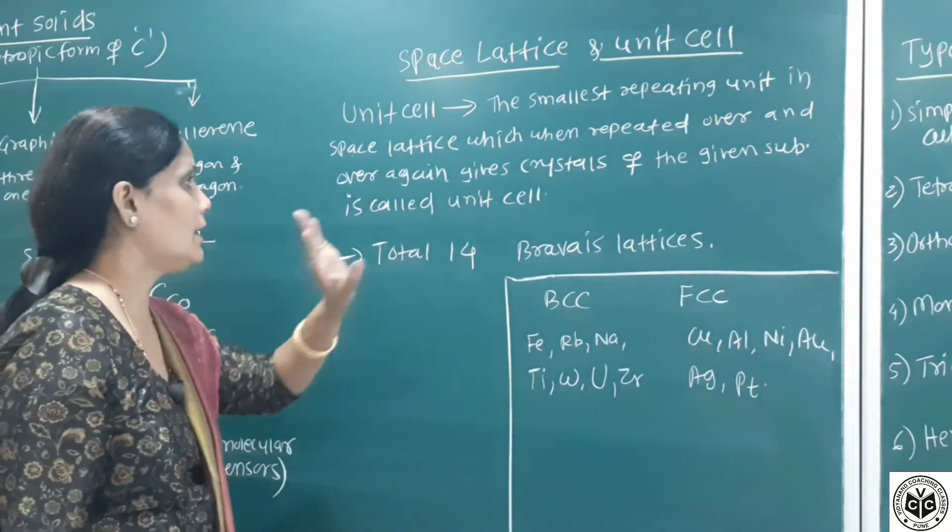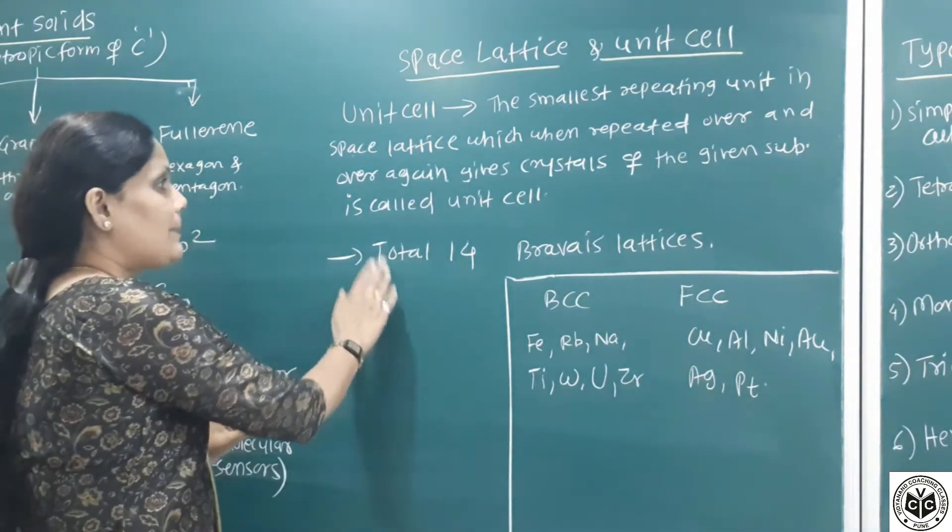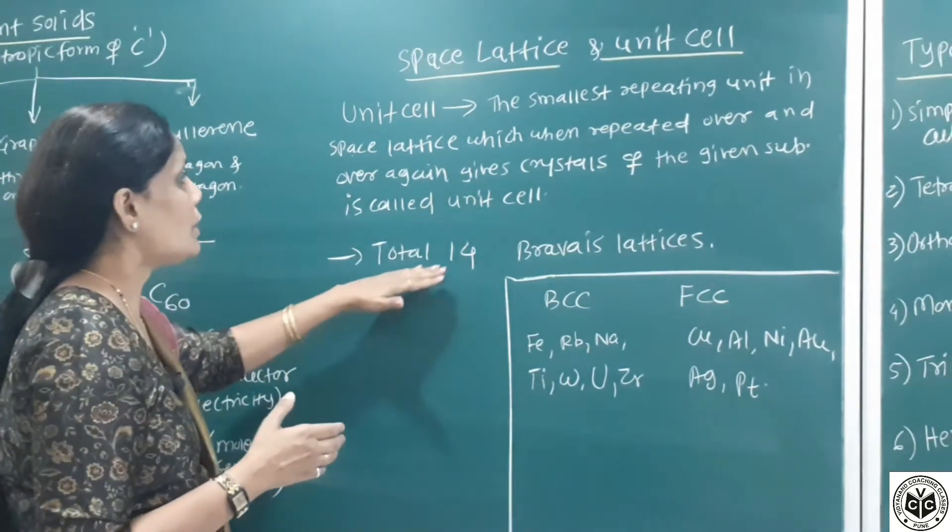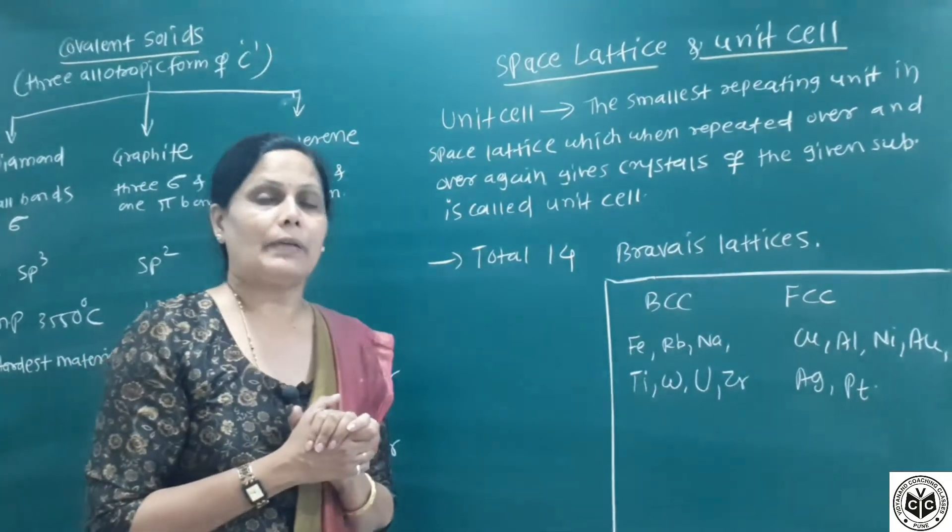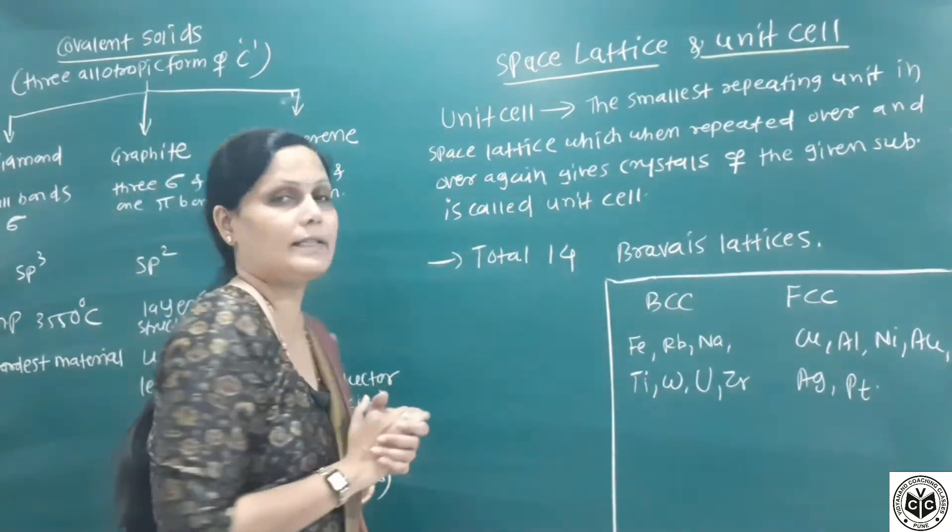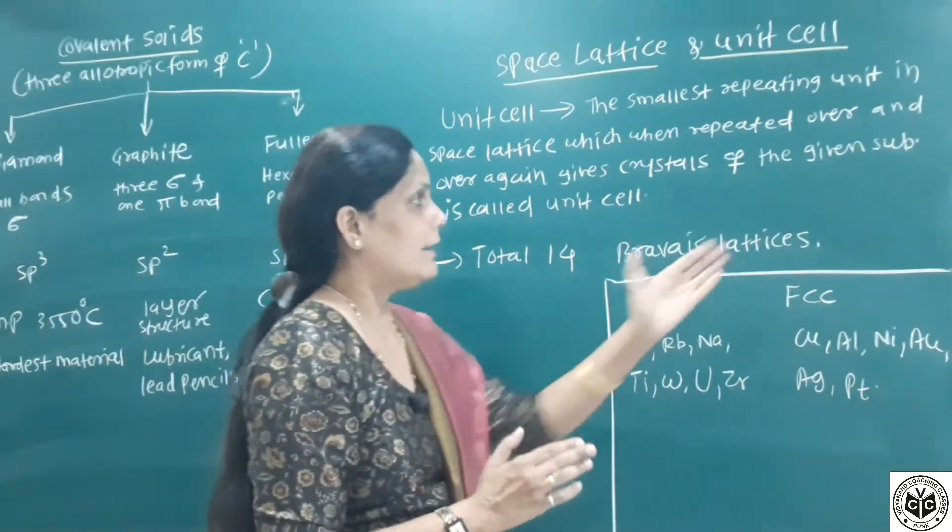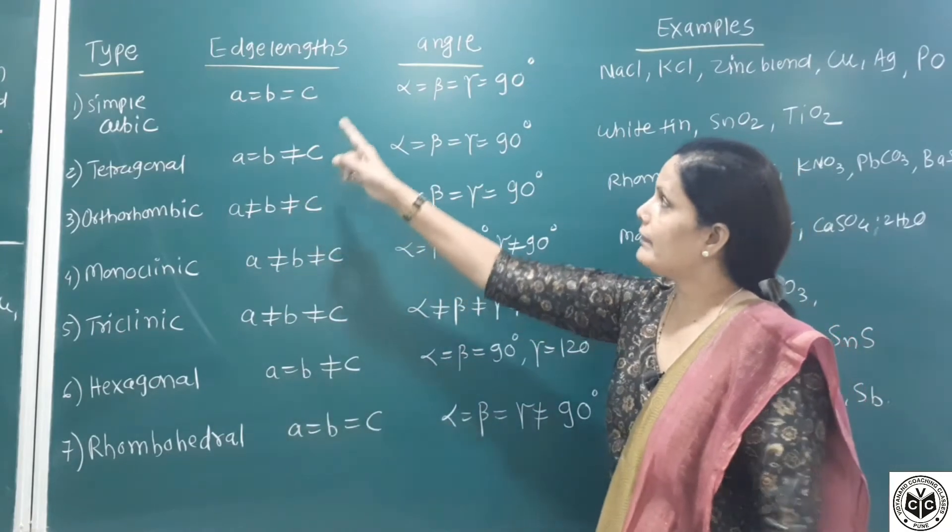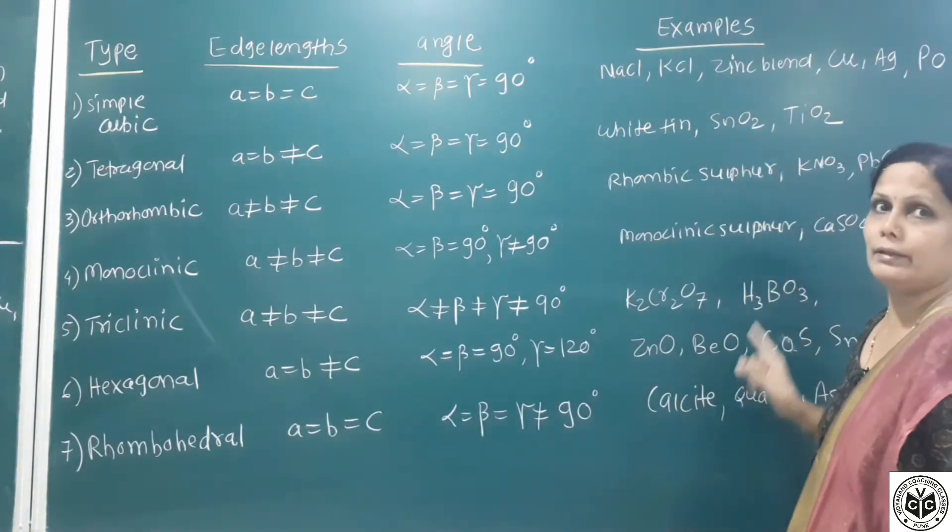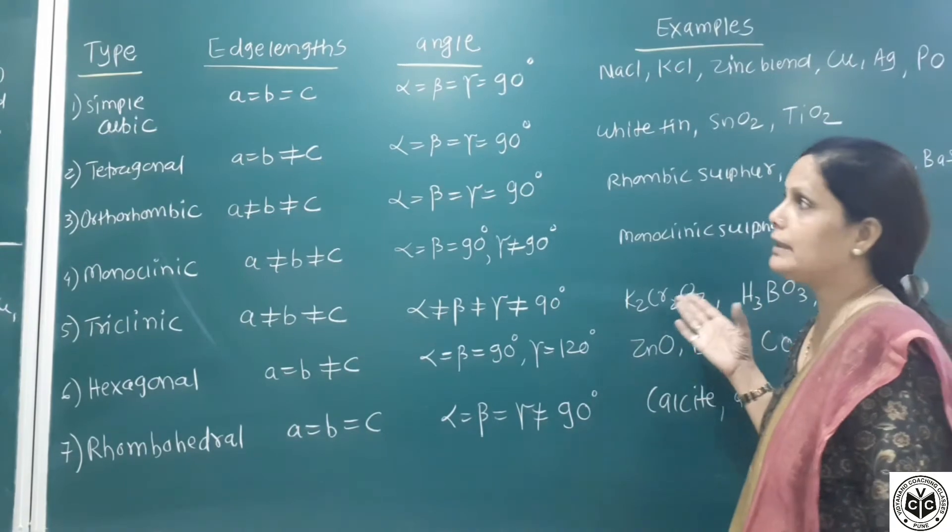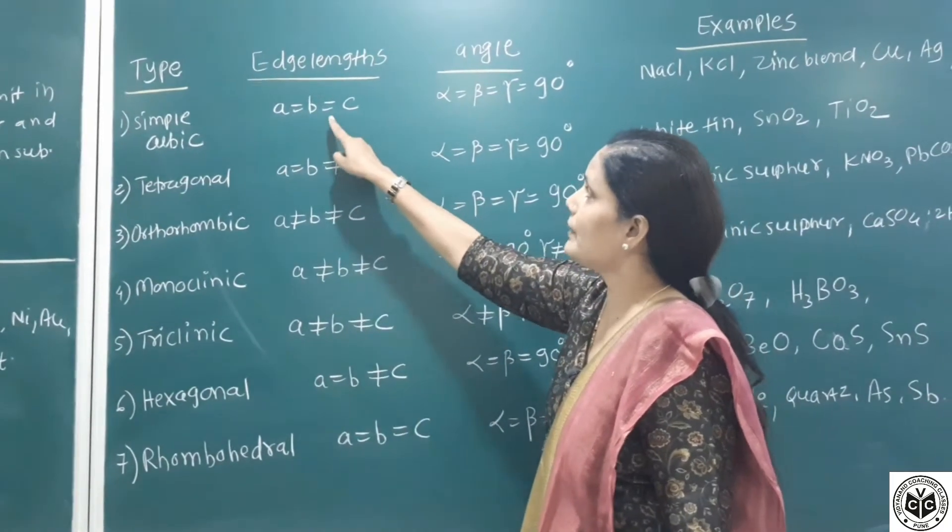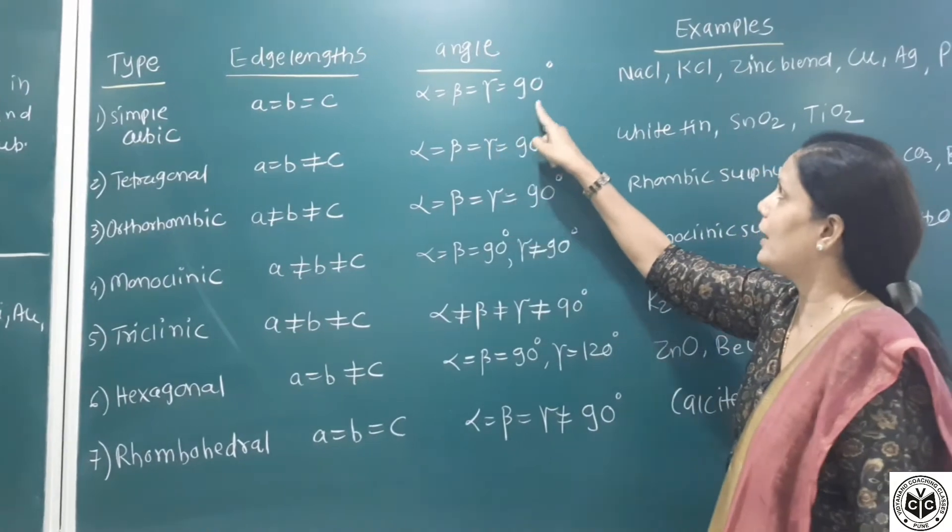As per X-ray crystallographic study, there are total 14 types of Bravais lattices. Bravais was a French mathematician who introduced different 14 types of crystal lattice systems. Out of which 7 are important. Those 7 Bravais lattices are given in this table with edge length, angle, and examples. Examples are important.